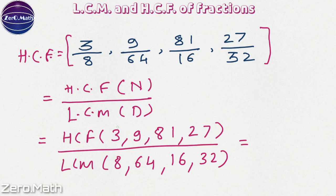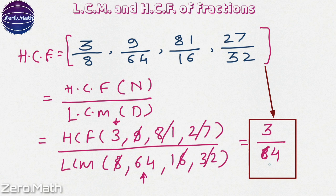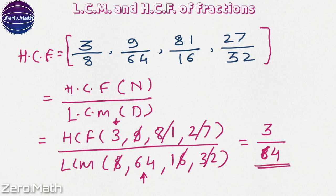Now, to find out the HCF of the numerators, we find the lowest number, that is 3. Check whether 3 is a factor of 9. Yes. Whether 3 is a factor of 81. Yes. Whether 3 is a factor of 27. Yes. Hence, HCF has to be 3. To figure out the LCM of the denominators, let us first figure out which is the highest number — that is 64. Whether 64 is completely divisible by 8. Yes. Is it completely divisible by 16? Yes. It is completely divisible by 32 as well. Hence, the LCM has to be 64. Hence, the HCF of the given fractions is 3 over 64.